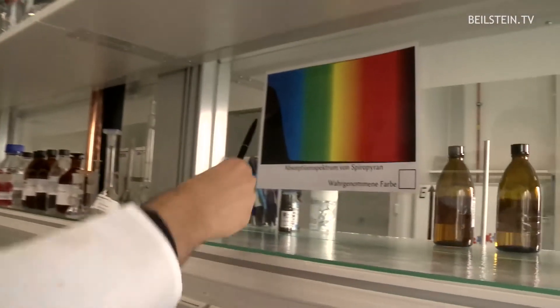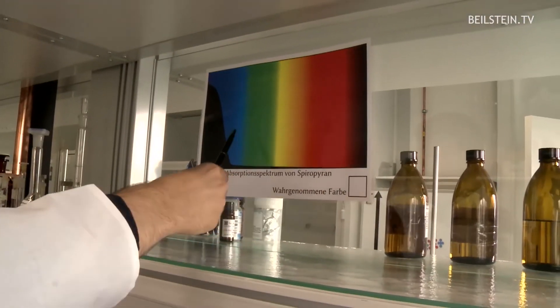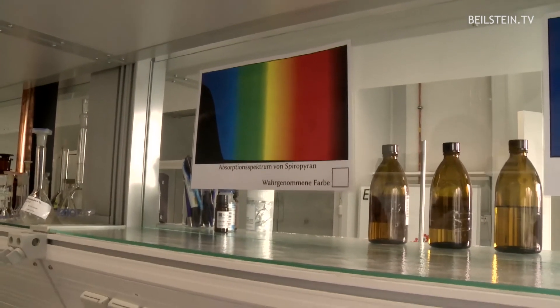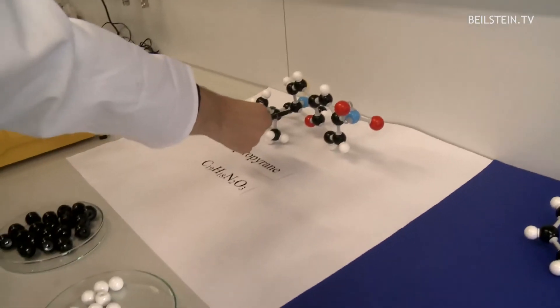Okay. And what about the other molecule? The spiropyran molecule cannot absorb photons per visible spectrum. Thus, we see no color. And this is caused by the spiral center over here.